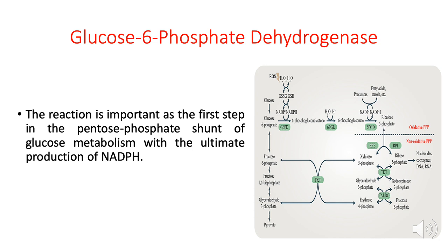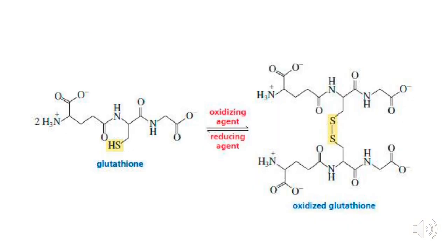The pentose phosphate shunt is very important in the generation of NADPH. What is the importance of producing NADPH? Oxidizing agents can damage cells and tissues in our body. What protects these cells from oxidizing agents is glutathione. In the process of protecting cells and tissues, glutathione is oxidized by the oxidizing agent, becoming oxidized glutathione.